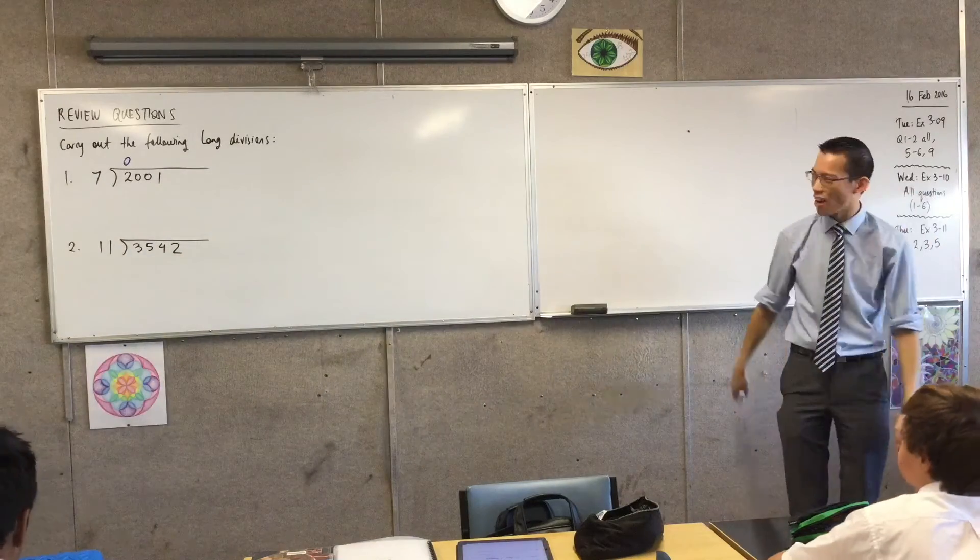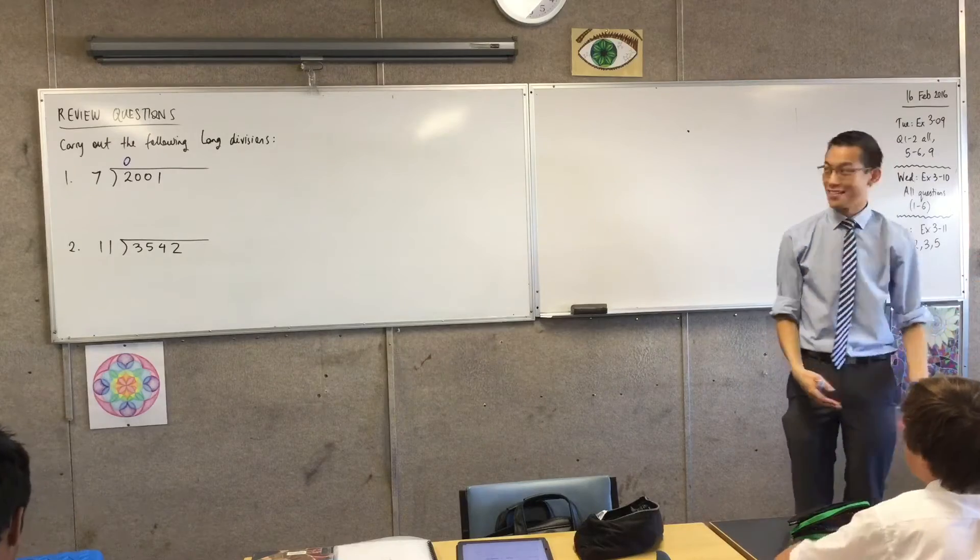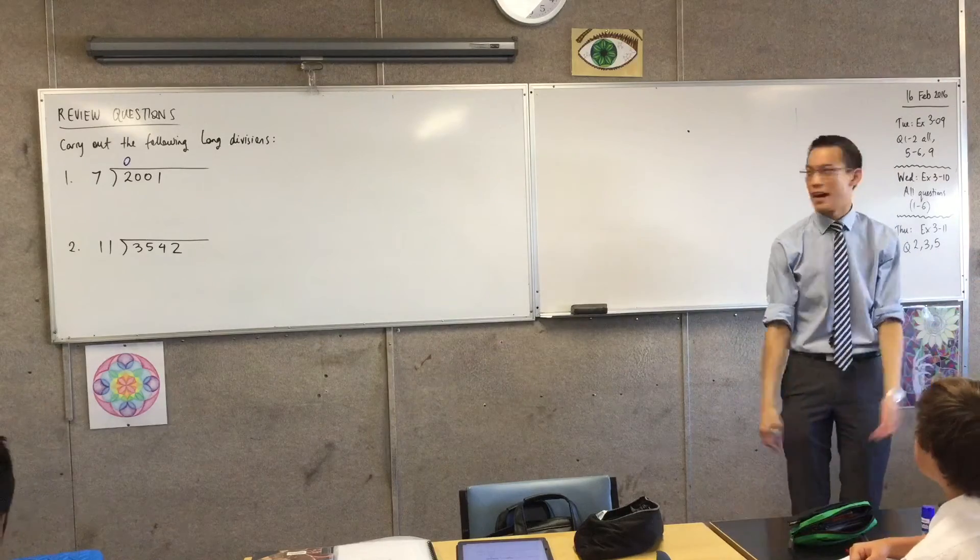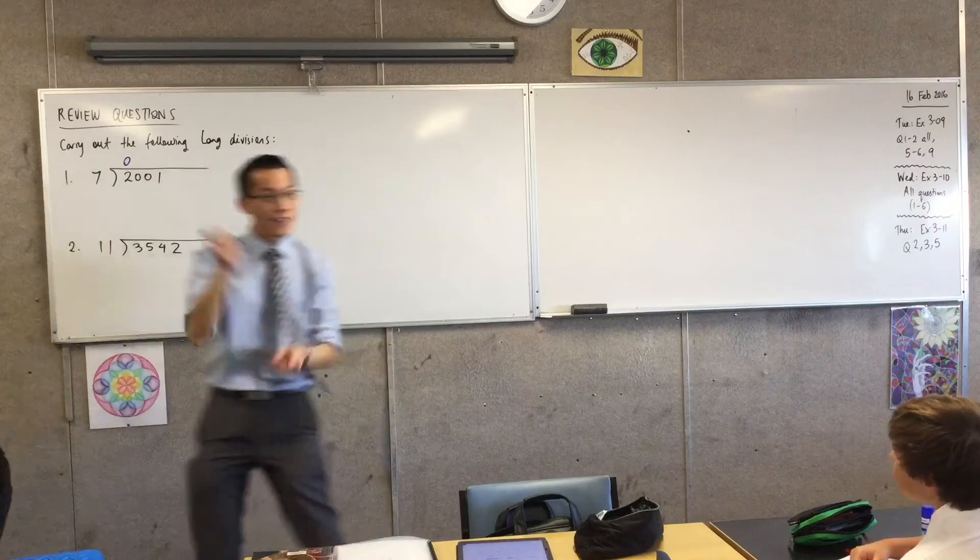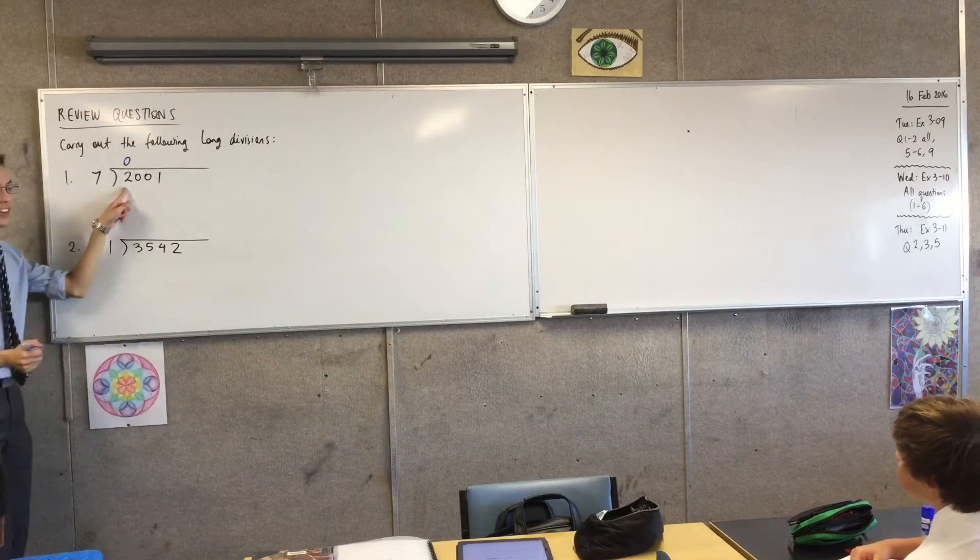Don't just forget about it like, oh, it doesn't matter because there are none. 0 really matters as a number. As you can see, this is 2001, not 21. So having written down 0, can't fit any 7s in there.